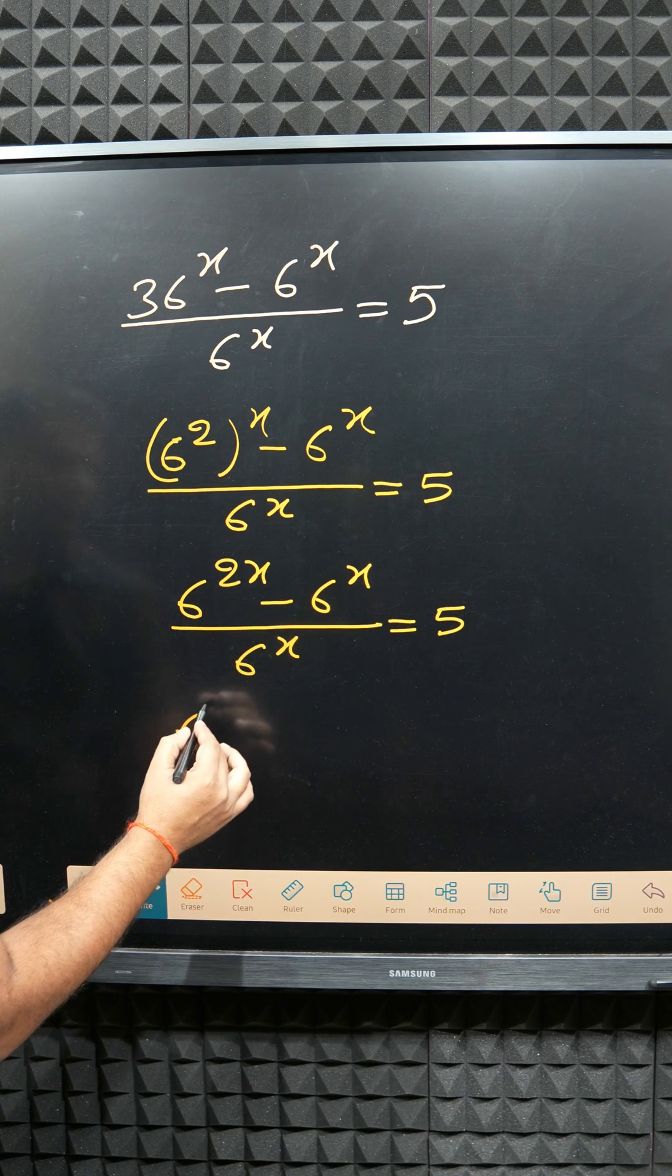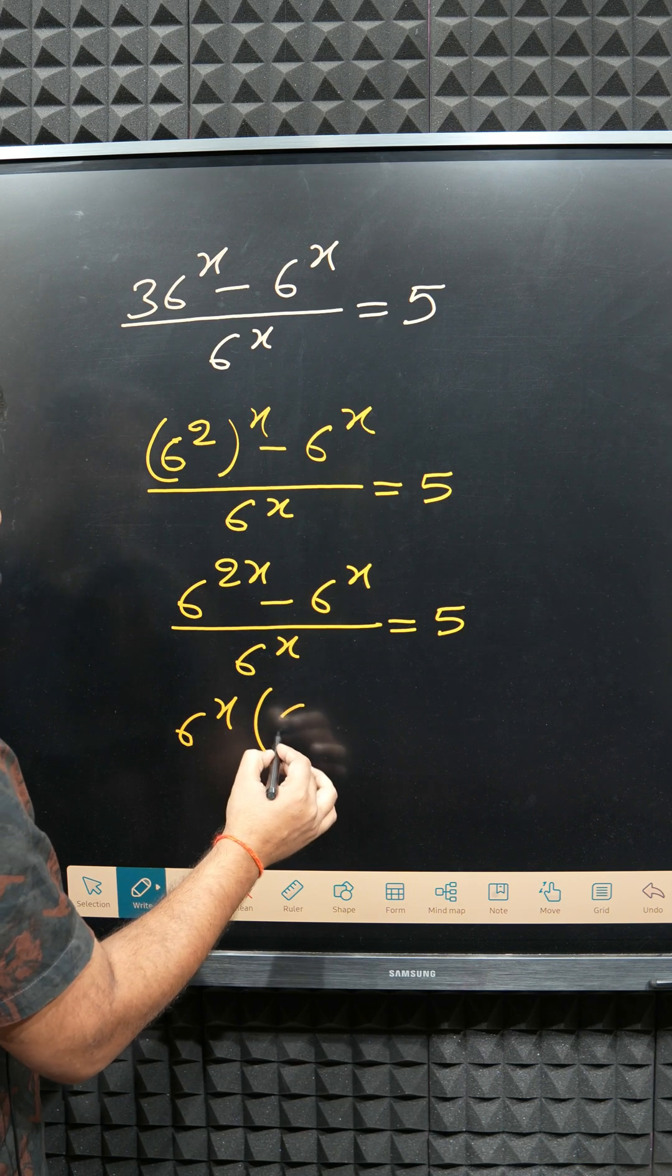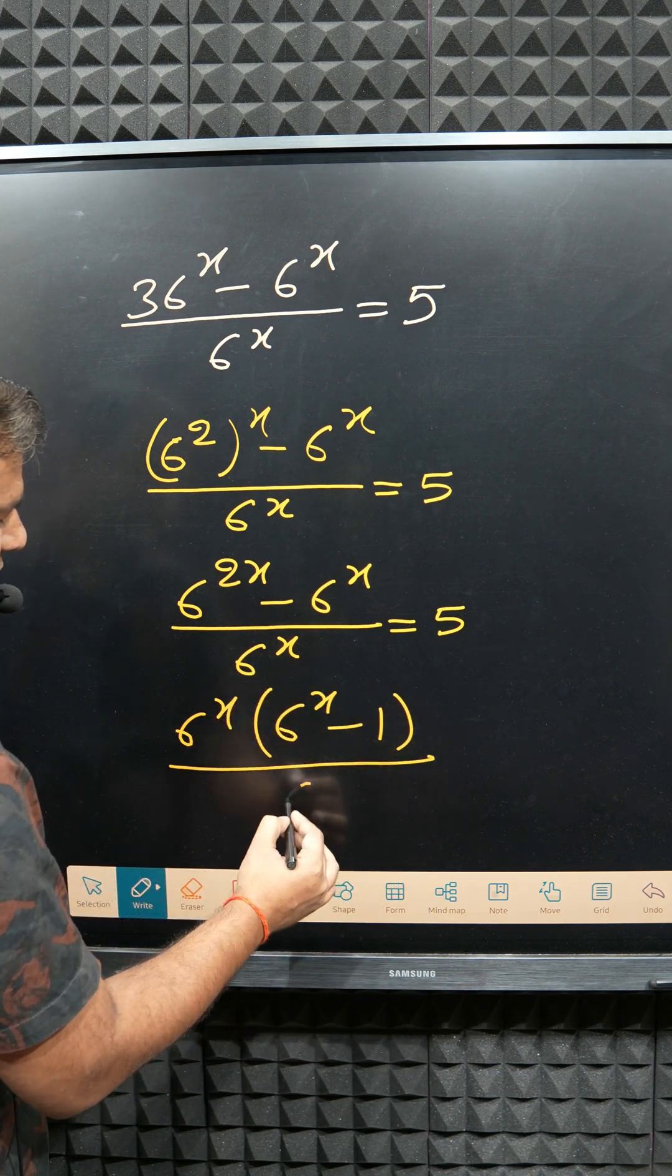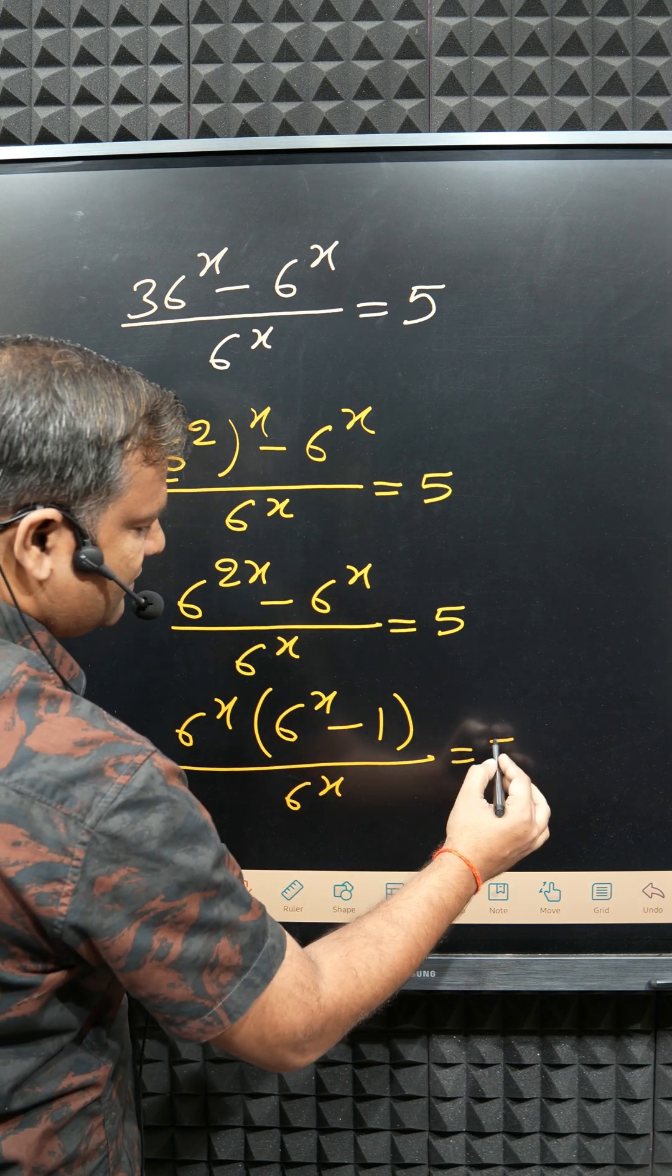After that, 6 to the power x is common in the numerator, then we got 6 to the power x times 6 to the power x minus 1 divided by 6 to the power x, this equals 5.